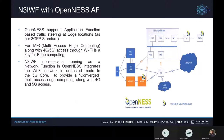This slide shows how we integrate N3IWF with AF in OpenNESS to provide multi-access edge connectivity. OpenNESS microservices showing integration of network functions are marked here accordingly. As Anurag explained, this slide shows how the application function talks to the 5G control plane and how the N3IWF talks to the access mobility function and the UPF. Together with N3IWF and 5G and LTE access to devices, it makes the edge network a truly multi-access edge computing platform.